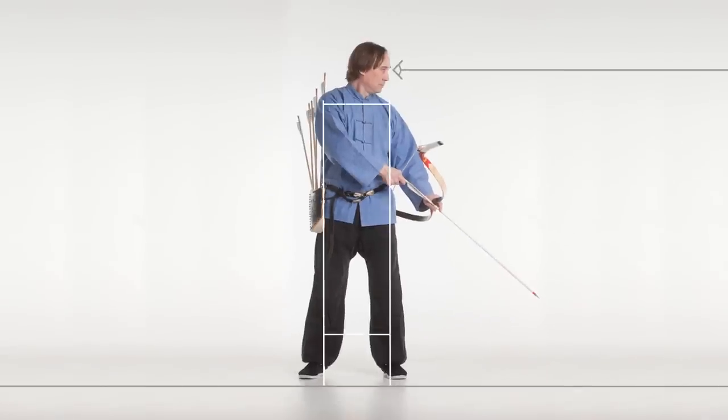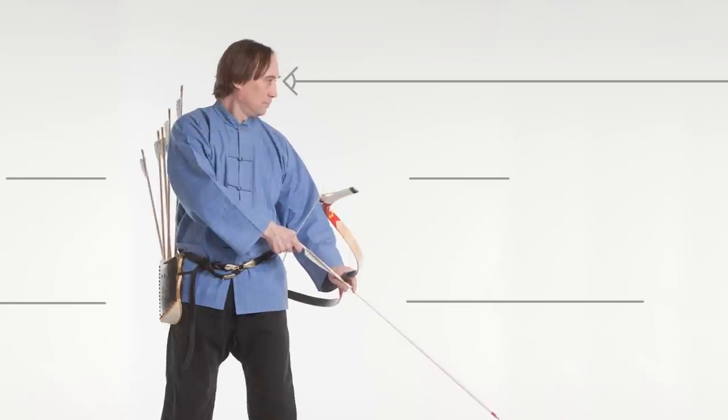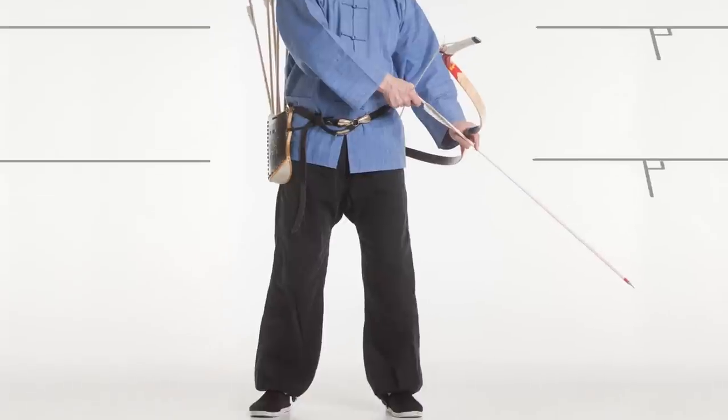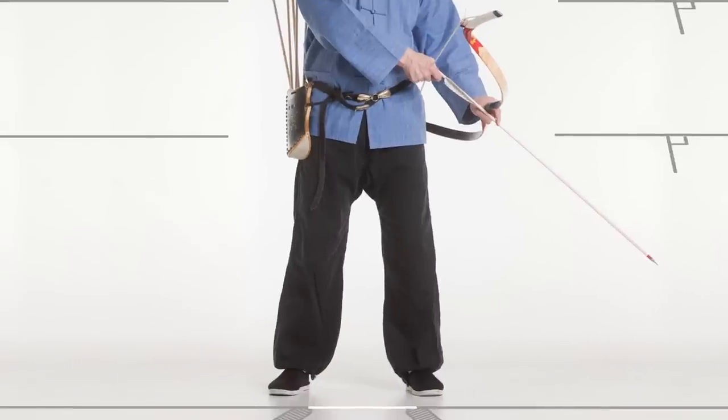Stand with your feet slightly wider than shoulder width, with the heels on a line. Your pelvis and torso should be perpendicular to the target. The knees are loose, just slightly bent. The tailbone is hanging down and the bottom should not protrude. The stomach should not stick out.